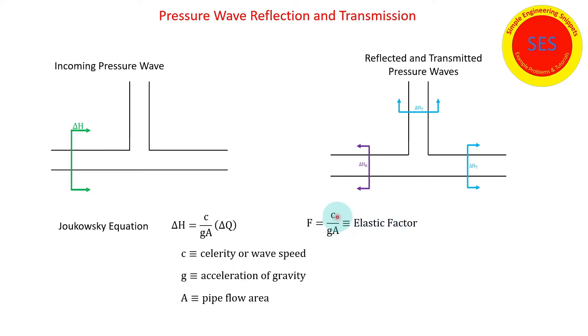This is often referred to as the elastic factor. It accounts for the compressibility of the liquid as well as the elasticity of the pipe. The Joukowsky equation is the change in head due to a change in flow is the change in flow times the elastic factor.